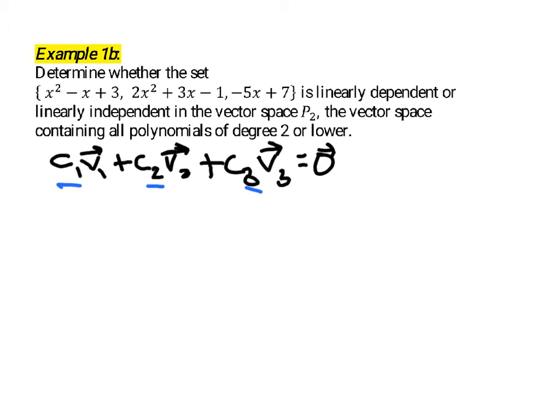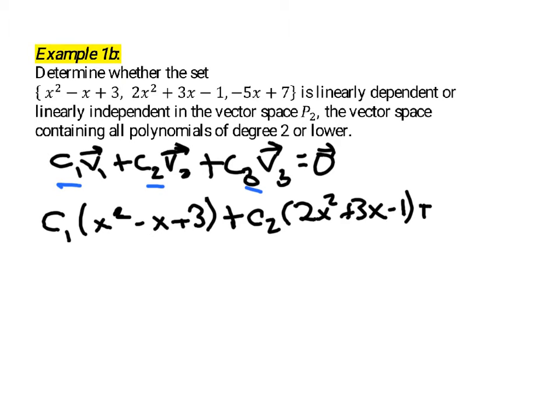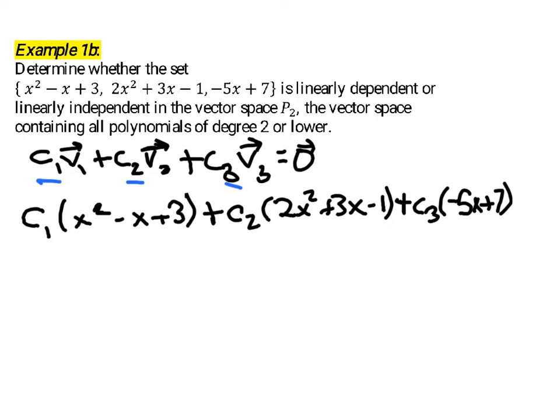If we set up this equation, we have c1 times the first polynomial, x squared minus x plus 3, plus c2 times the second polynomial, 2x squared plus 3x minus 1, plus c3 times the third polynomial, negative 5x plus 7, is equal to the zero vector. The zero vector in this case, considering the set of all polynomials, would just be the constant zero. It would be a polynomial that has 0x squared, 0x, and 0 for the constant term.